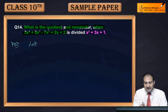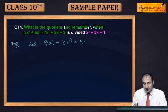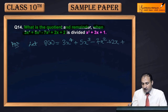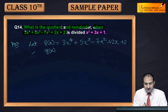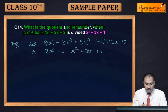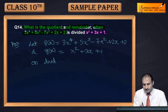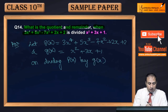Let p(x) be the polynomial — the expression to be divided — so p(x) = 3x⁴ + 5x³ - 7x² + 2x + 2. The divisor is taken as g(x), and g(x) is equal to x² + 3x + 1. Now, on dividing p(x) by g(x), we apply the long division method.